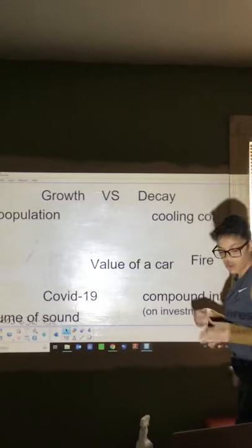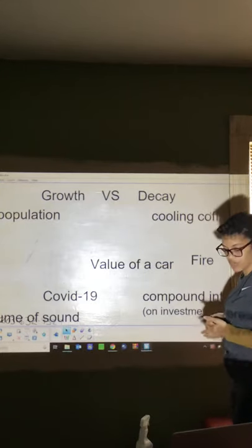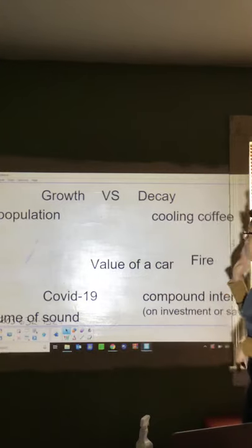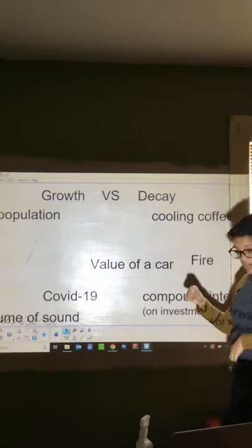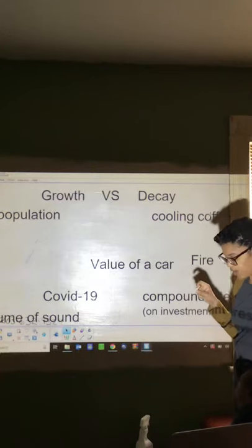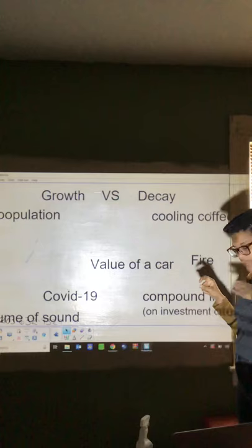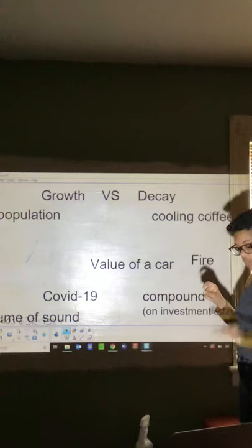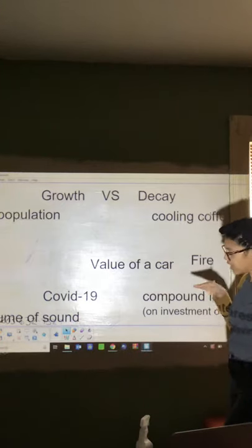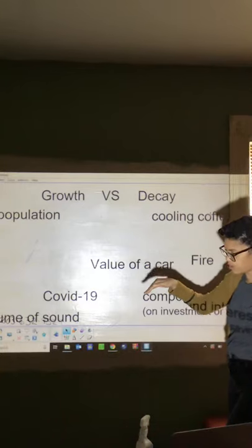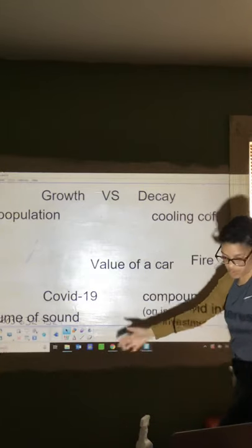Cooling coffee down is decay — whenever something is going down, it's decay. The reason it's exponential is because coffee doesn't cool down slowly at a constant rate. When you take it out of the pot it goes down a little, stays hot for a while, but as soon as it turns lukewarm it drops quickly and goes straight to cold.